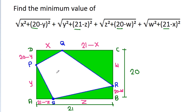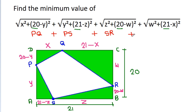By Pythagoras theorem: in triangle PDQ, square root of (x² + (20 - y)²) will be PQ. In triangle APS, square root of (y² + (21 - g)²) will be PS. In triangle BRS, square root of (g² + (20 - w)²) will be SR. In triangle RCQ, square root of (w² + (21 - x)²) will be RQ.